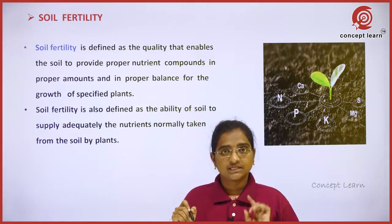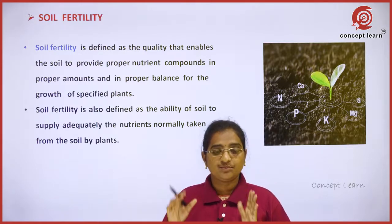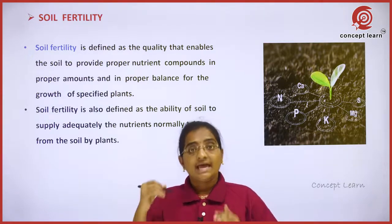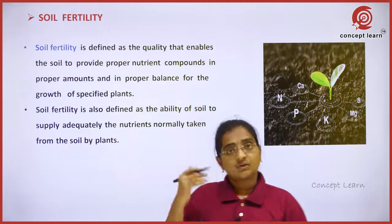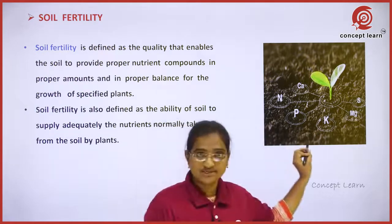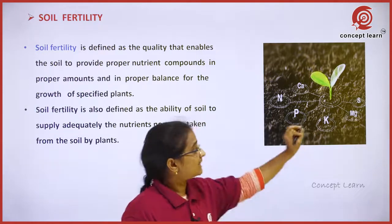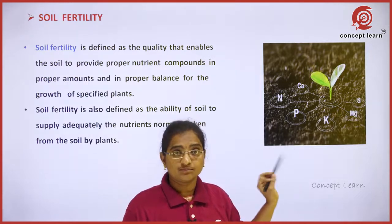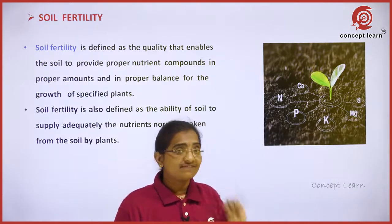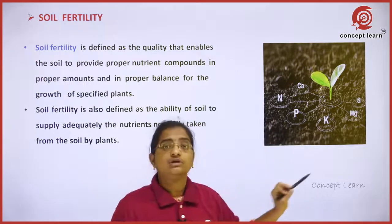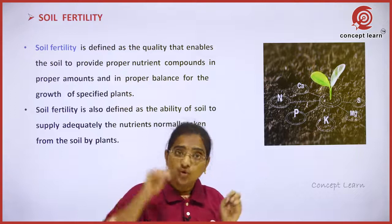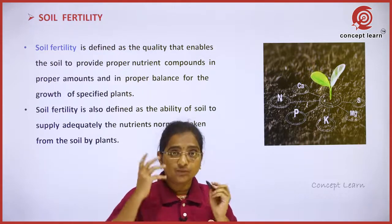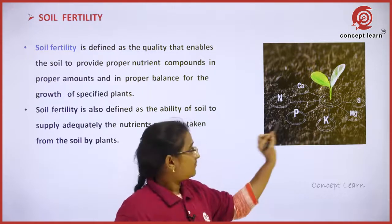N, P, K will be required in very high concentration. Then micronutrients like zinc, iron, copper, and boron — they will be required in very small amounts. So the soil must be able to supply these nutrients in those respective proportions.